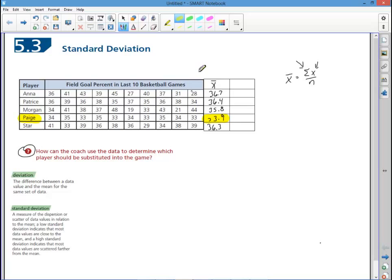What we're going to look at is this idea now of standard deviation. And what we're going to find is how far each number is away from the mean. Deviation is the difference between a data value and the mean for that same data set. And standard deviation is a measure of dispersion or scatter of the data values to the relation. We'll come back to the other parts of the definition in a moment.